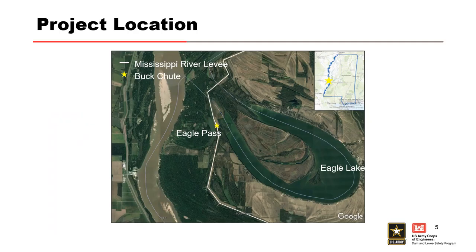The Mississippi River and Tributaries Project, or MRNT, consists of 3,500 miles of flood protection protecting more than 4 million people, 1.5 million homes, 33,000 farms, and countless vital transportation routes from Mississippi River floods. The main stem system, comprised of levees, flood walls, and various control structures, is 2,203 miles long. The focus of this presentation is on a stretch of the main stem levee at the location of Buck Chute in Warren County, Mississippi, about 16 miles northwest of Vicksburg.